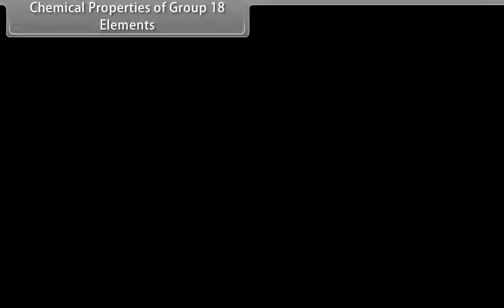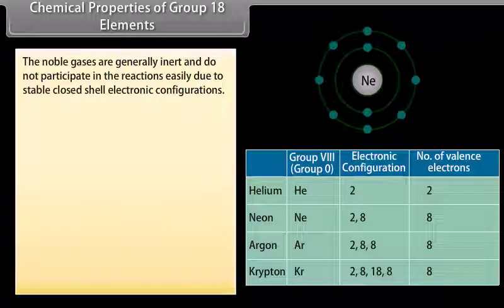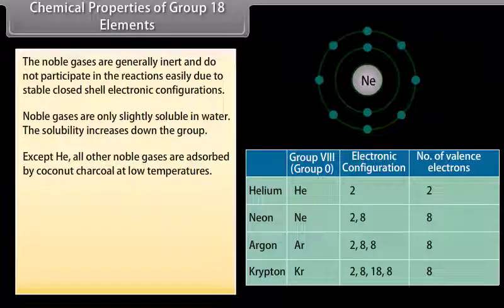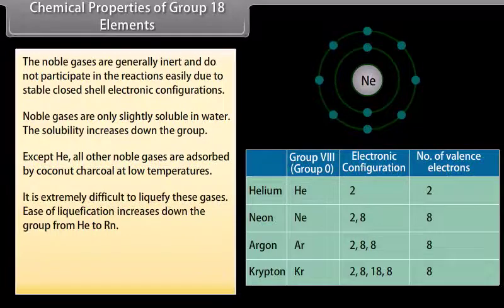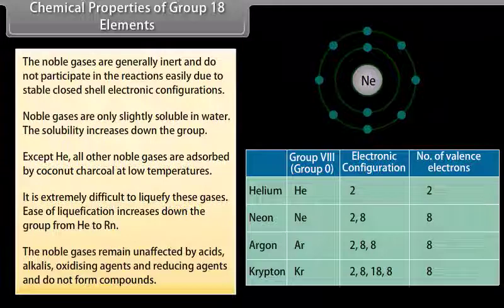Chemical properties of group 18 elements: Noble gases are generally inert and do not participate in reactions easily due to stable closed-shell electronic configurations. Noble gases are only slightly soluble in water, and solubility increases down the group. Except helium, all other noble gases are absorbed by coconut charcoal at low temperatures. It is extremely difficult to liquefy these gases, and ease of liquefaction increases down the group from helium to radon. Noble gases remain unaffected by acids, alkalies, oxidizing agents and reducing agents, and do not form compounds.